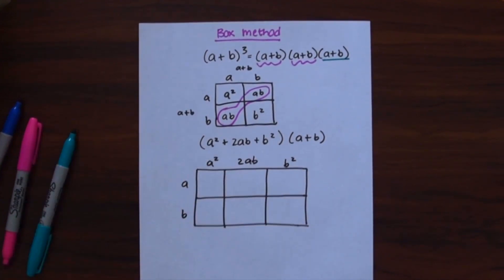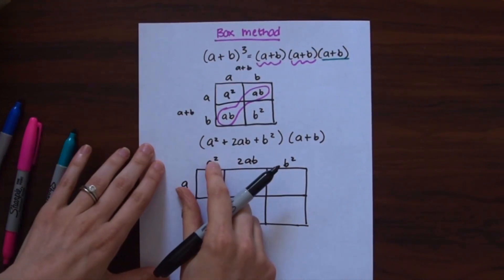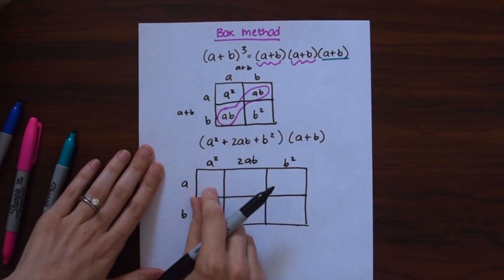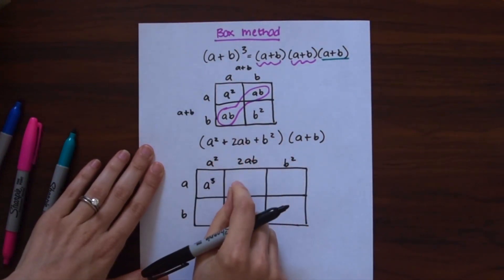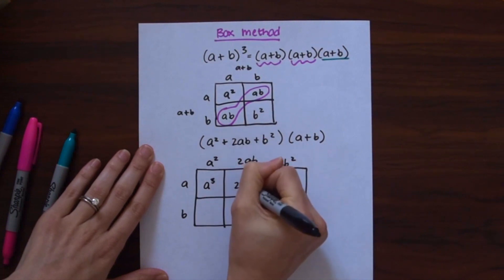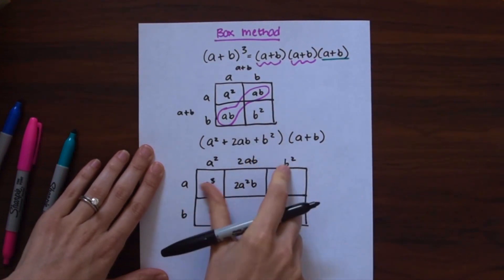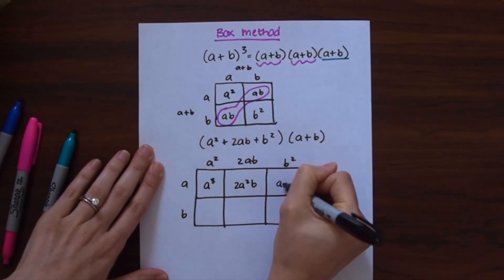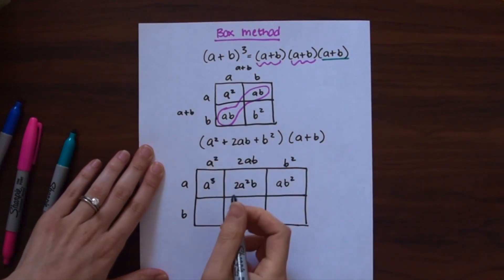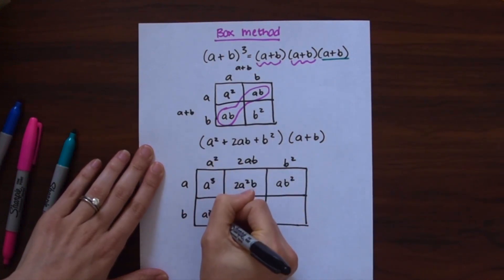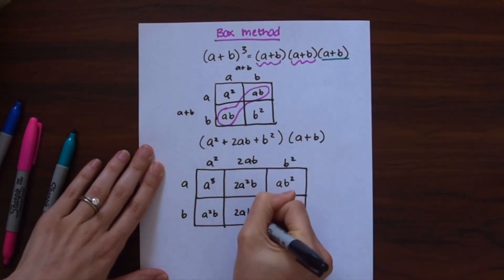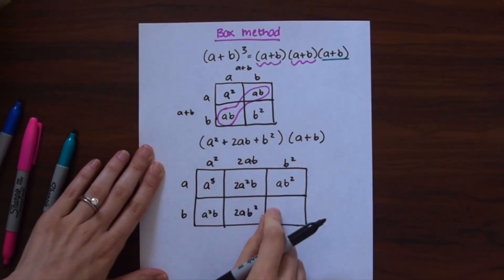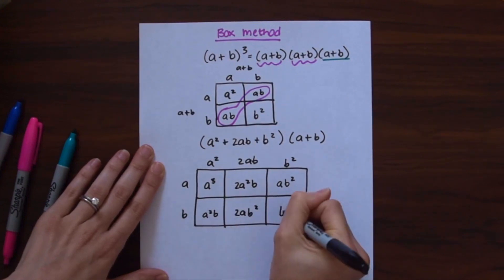Now we're going to do the same thing and multiply where terms line up. So a² times a is a³, 2ab times a is 2a²b, a times b² gives us ab². Then we get a²b over here, 2ab² over here, and b² times b gives us b³.